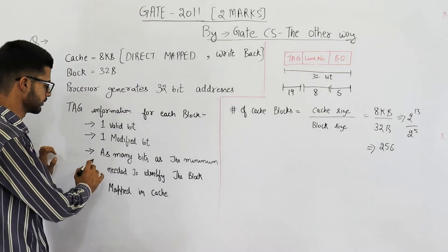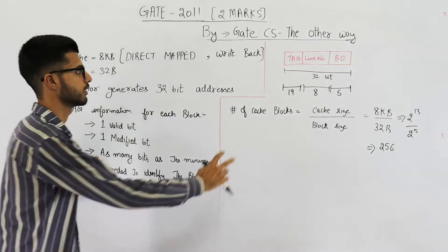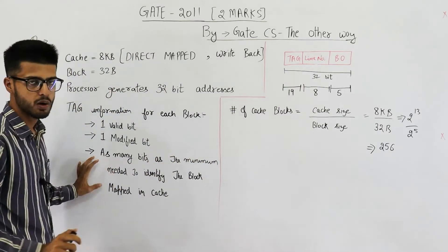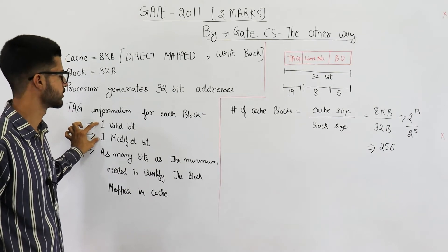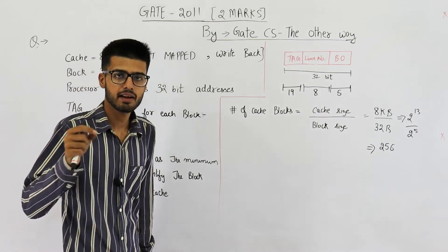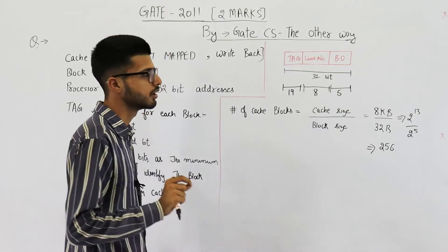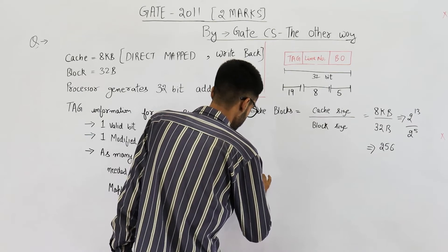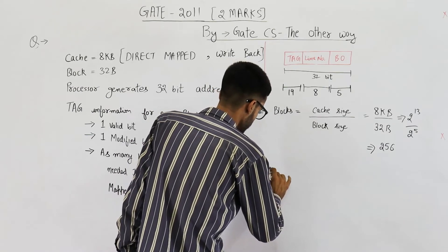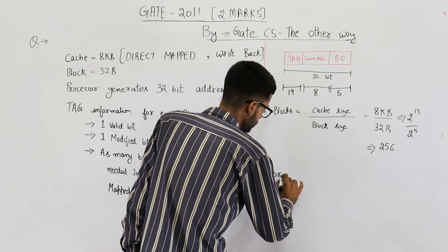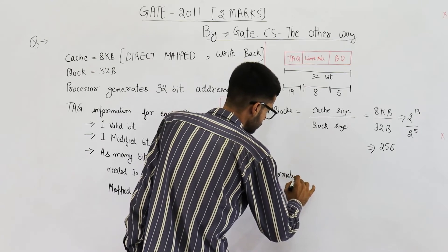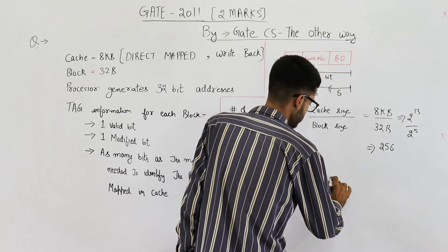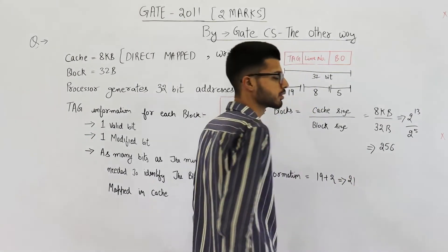This is the tag field within some address generated. But along with this tag field, this tag field corresponds to this part of the question. Along with this, we are also saving 2 extra bits. So that means the tag that is saved in cache directory will be of 21 bits. So tag info will be 19 plus 2 is equal to 21 bits.